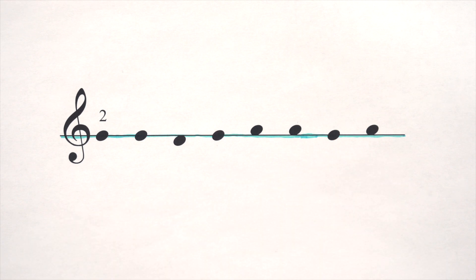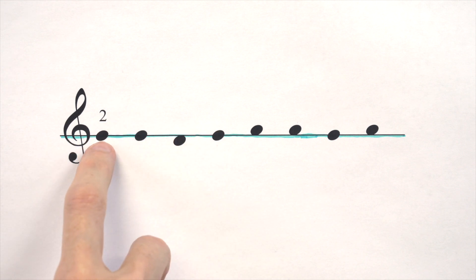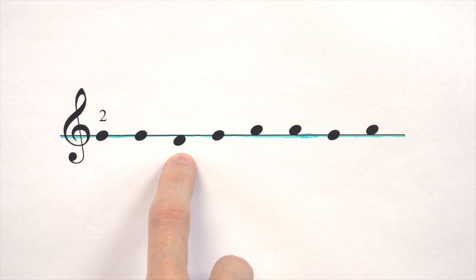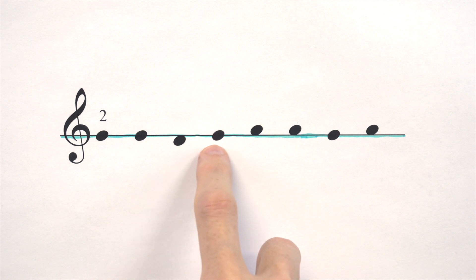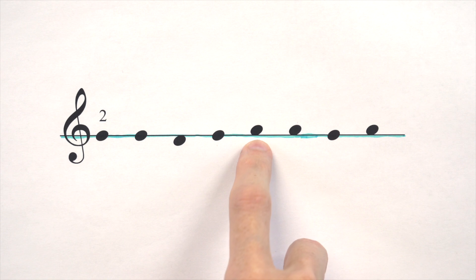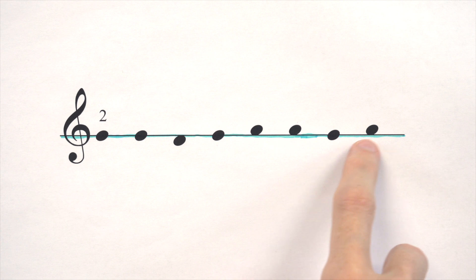Great. Now let's do it one more time, and this time say the letter names. Since we know any note on this line is G, we can say G, G. Now we're going a step below G, which would be F. Then it steps back up to G. Now we're going above G, which is A, A, G, A.